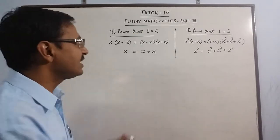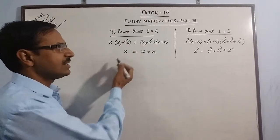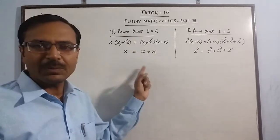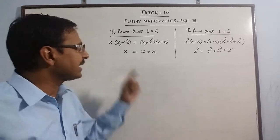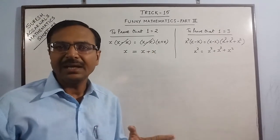So when I cancelled x minus x as a factor here and arrived at this result x is equal to x plus x, this step is wrong because we cannot cancel 0 factor on both sides of any equation.